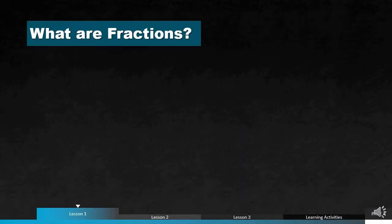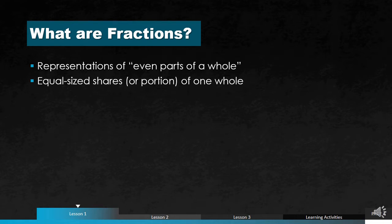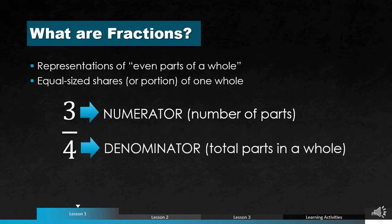So what are fractions? Fractions are representations of equal parts of a whole. This means that you have equal size shares or portions of one whole. For example, you have three parts — three here is what we call the numerator, and the numerator represents the number of parts that we have. And then four is your denominator, which represents the total parts in a whole.